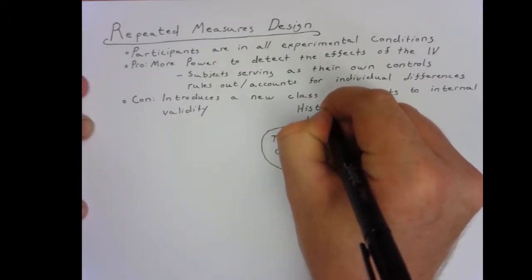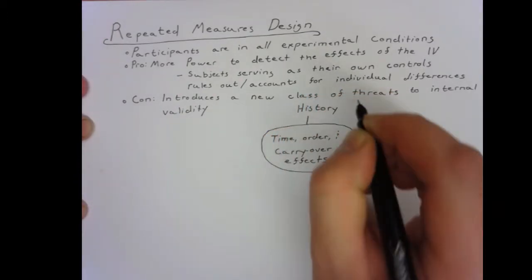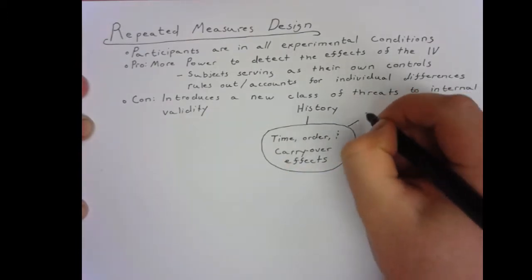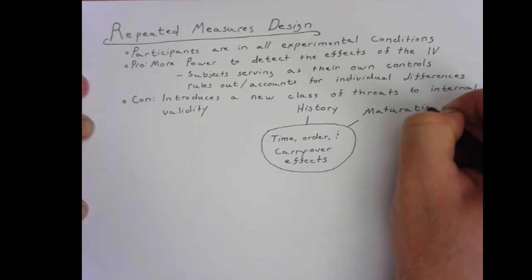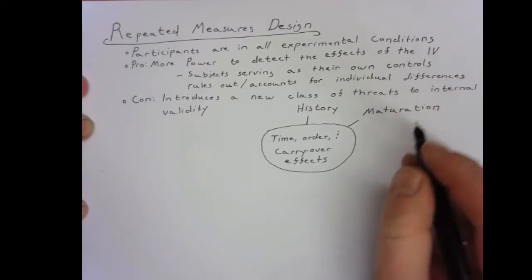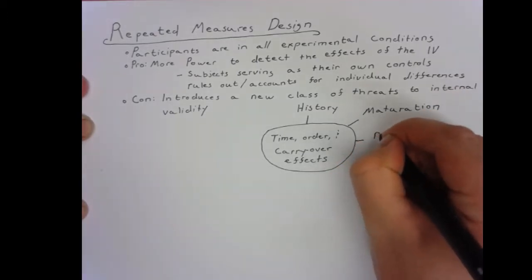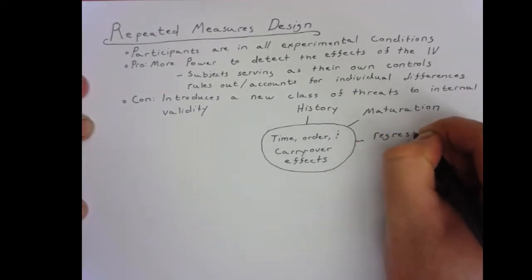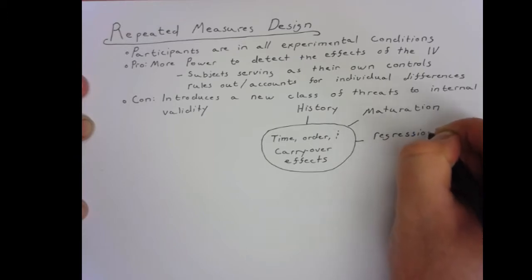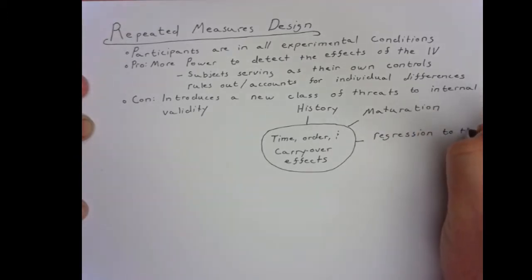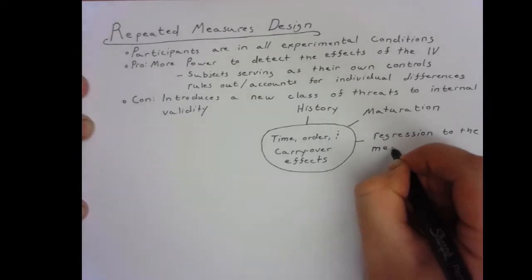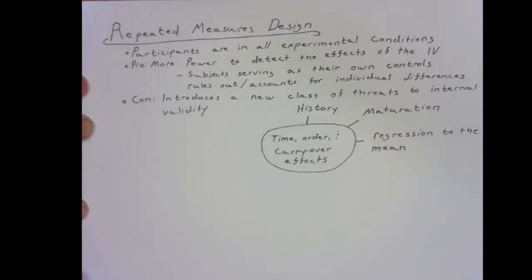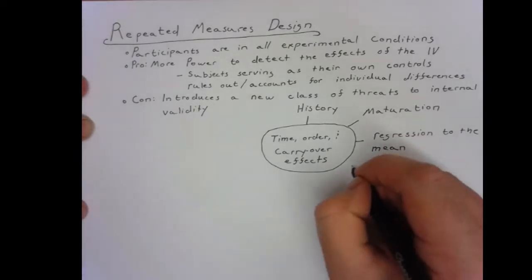History is a type of time effect wherein something happens when participants were measured in one condition but not the other. Since you are measuring people twice, they could also mature from one measurement to the other. Another issue is that when you have an extreme measurement, the next one always tends to be less extreme — they regress to the mean.